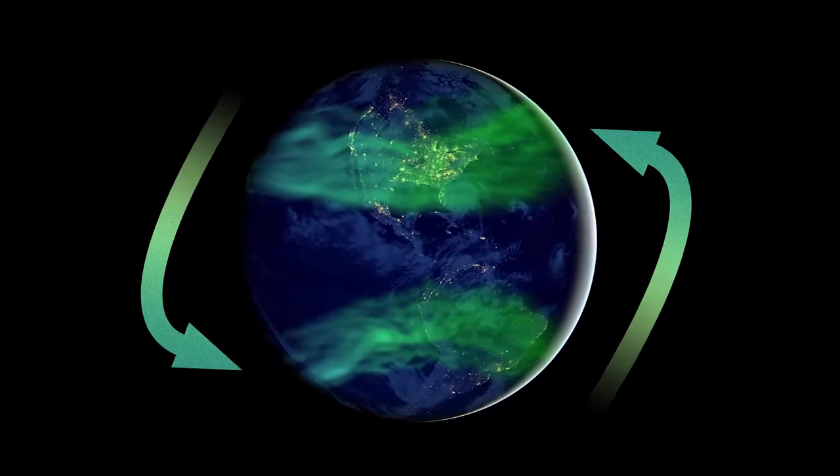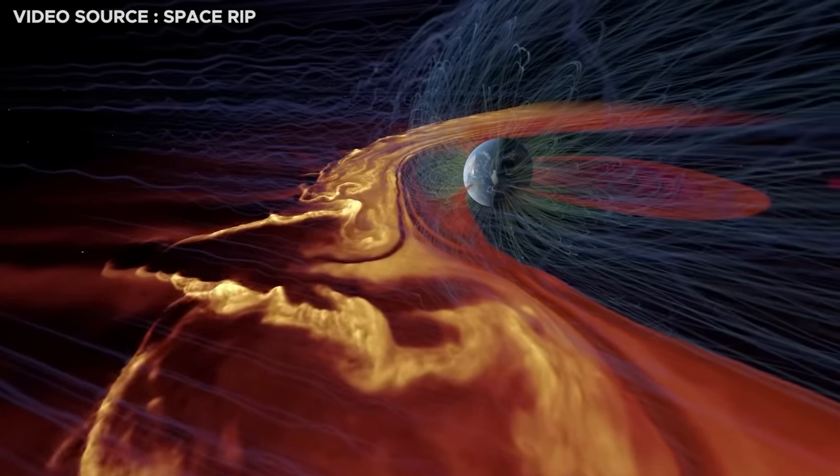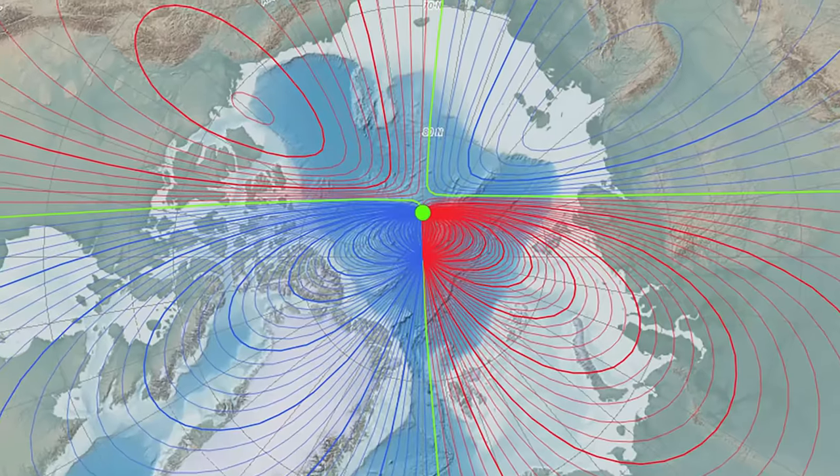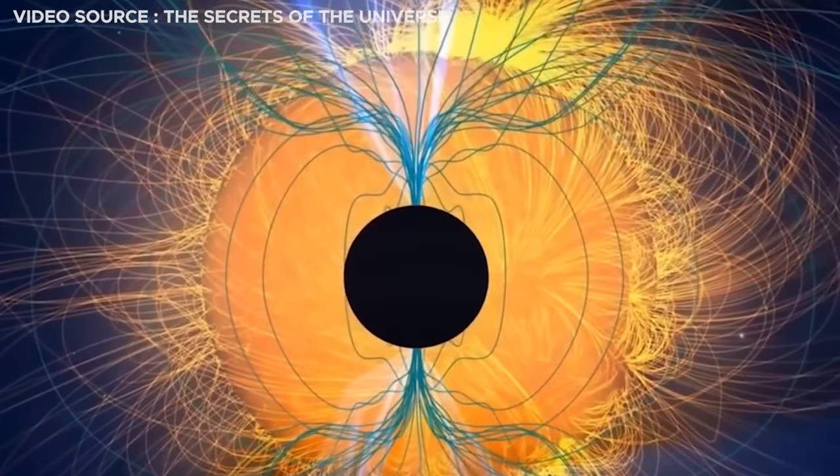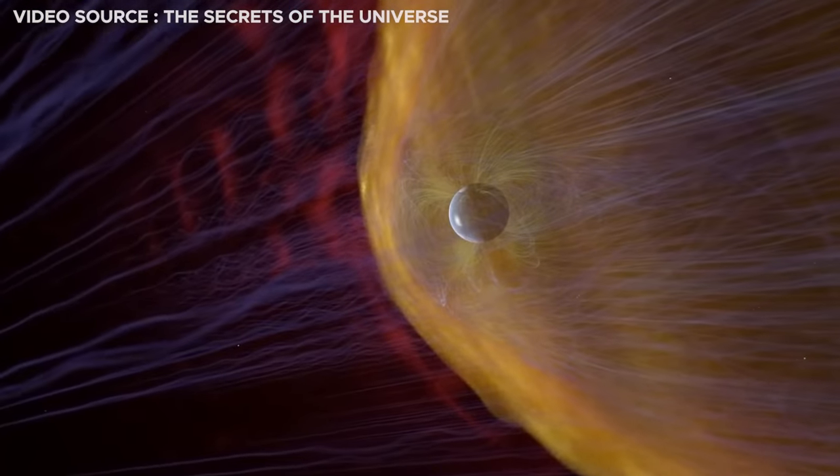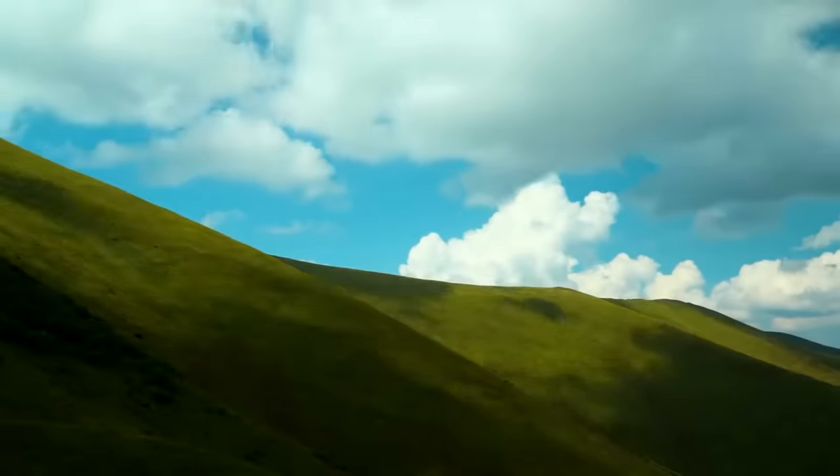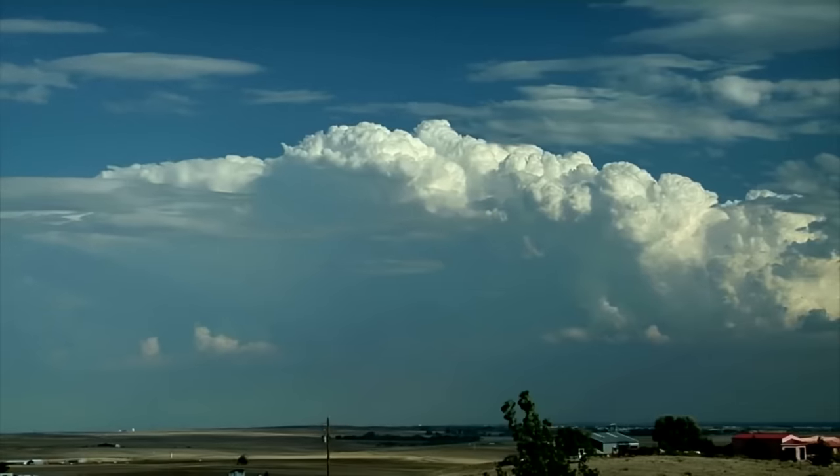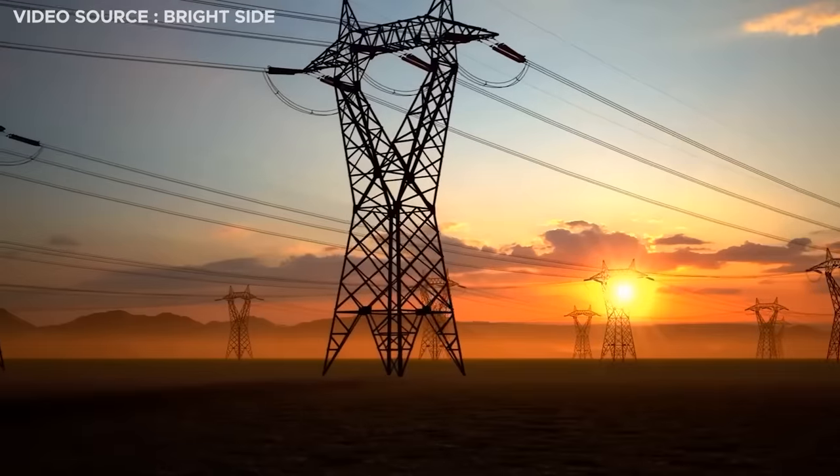The significance of geomagnetic reversals lies in the role of the Earth's magnetic field as a protective shield. During a reversal, as the magnetic field weakens and becomes disordered, it becomes less effective at shielding the planet from harmful solar and cosmic radiation. This heightened exposure could have substantial impacts on Earth's atmosphere and climate, as well as on technological systems like satellites and power grids.